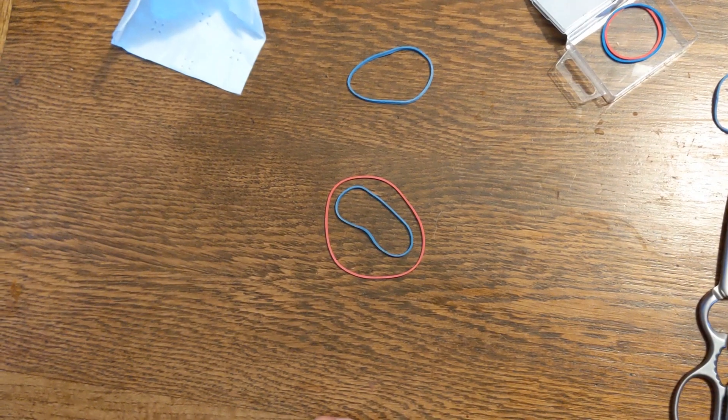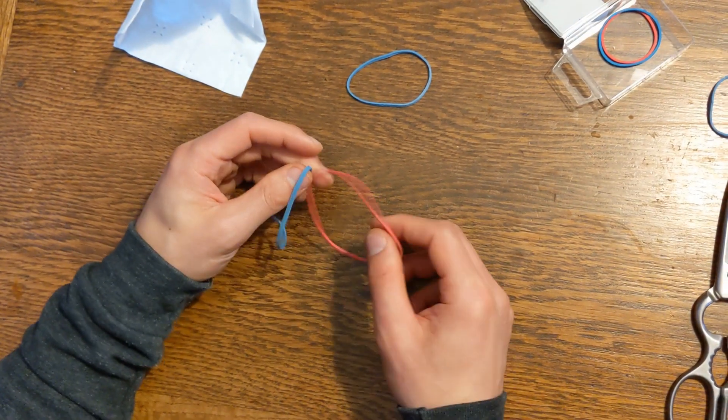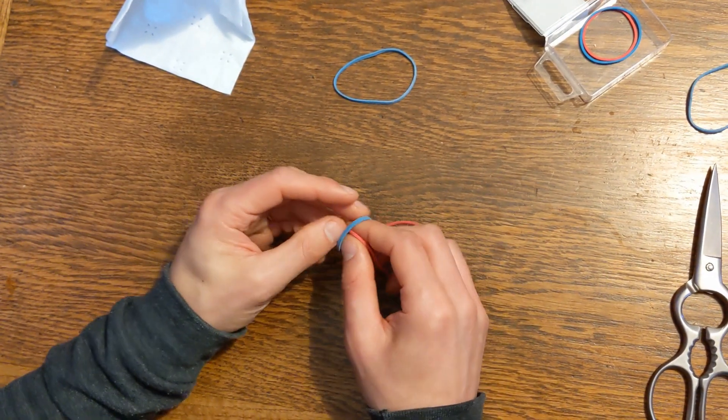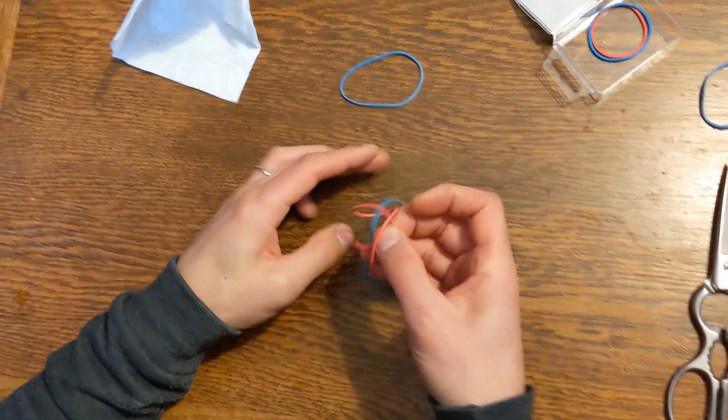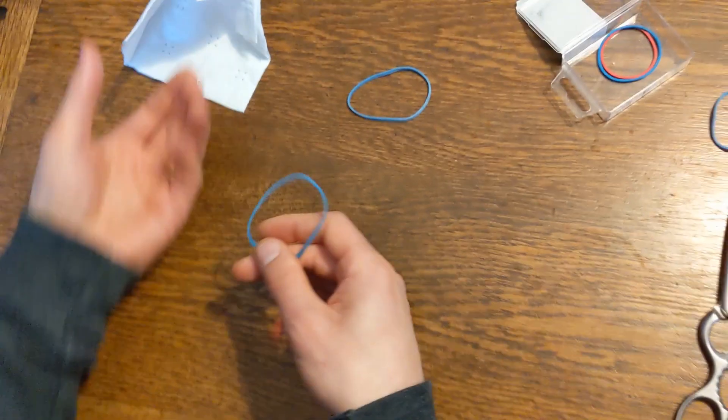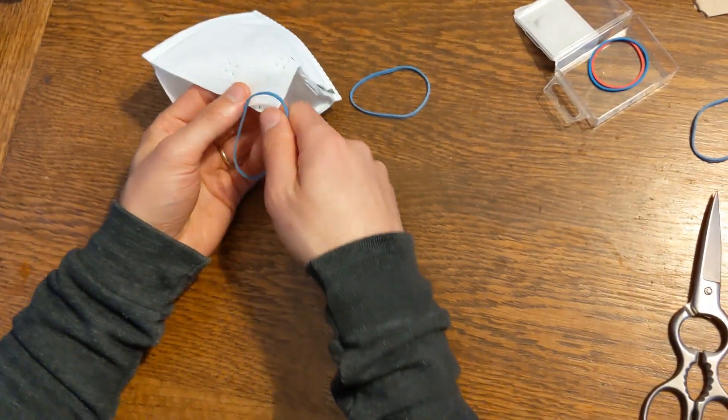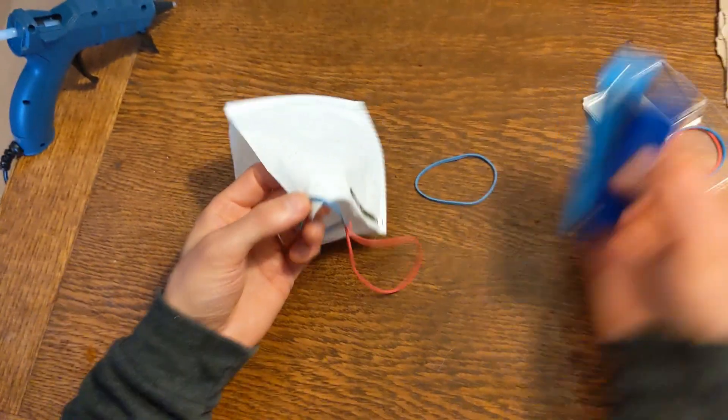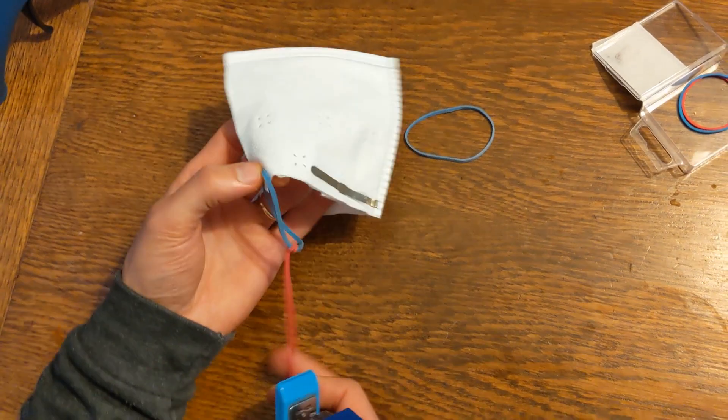The last bit is to attach elastic straps. The easiest way I found is to just take rubber bands and connect them like this. Then you have an elastic and then use a stapler to attach it to the sides of the mask.